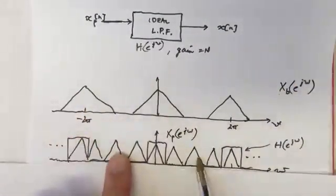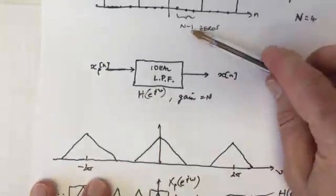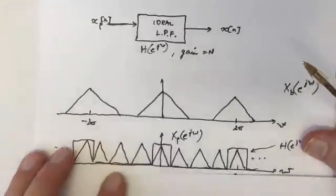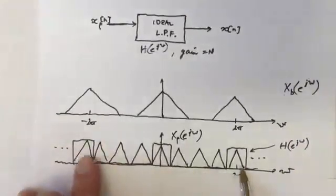And we compress by a ratio that is given by capital N here. This is the number of zeros that you added. So that then gives this waveform here.